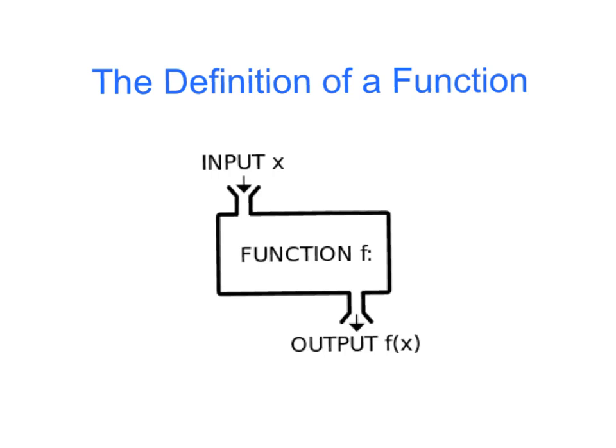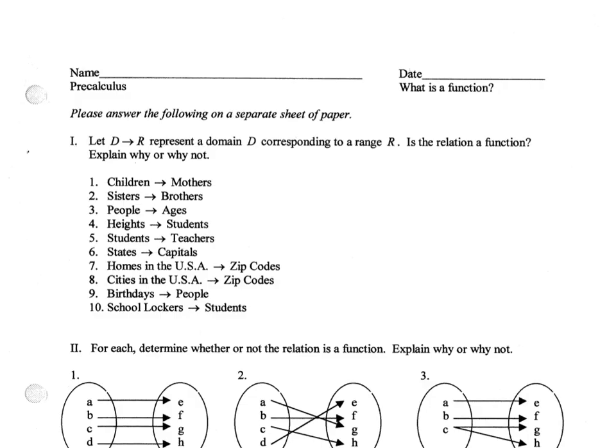We are going to take a look at some relations and determine whether or not they are functions. In the directions they say, let D mapped onto R represent a domain D corresponding to a range R. Is the relation a function? Explain why or why not.